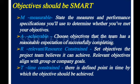Measurable: State the measures and performance specifications you will use to determine whether you have met your objectives. Achievable: Choose objectives that the team has a reasonable expectation of successfully completing. Relevant or resource constraint: Set objectives the project team believes it can achieve. Relevant objectives align with group or company goals. Time constraint: There is a defined point in time by which the objective should be achieved.